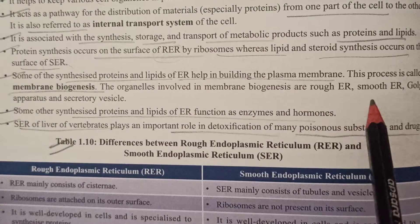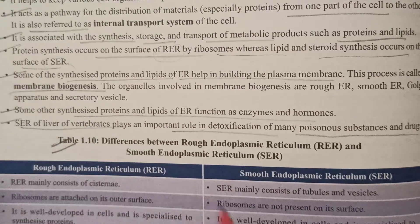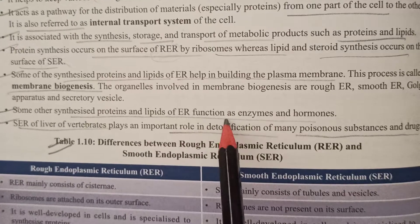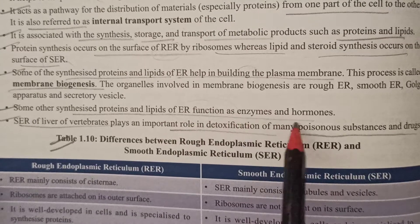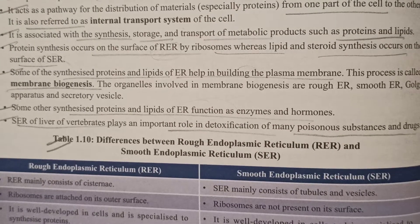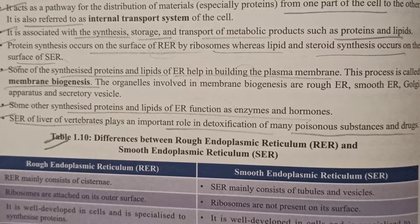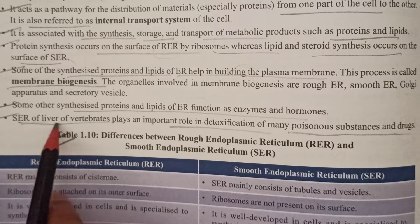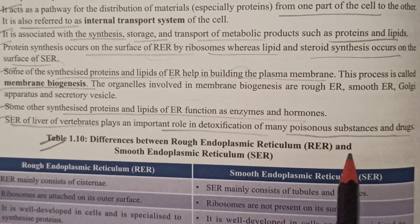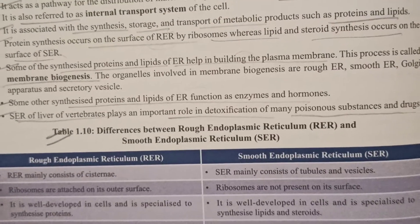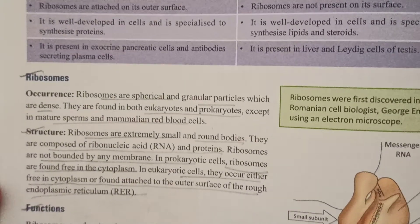Membrane biogenesis is the synthesis of protein and lipids for the plasma membrane. The ER also functions in synthesizing enzymes and hormones. The smooth endoplasmic reticulum in the liver plays an important role in the detoxification of many poisonous substances and drugs.